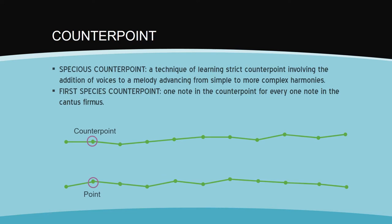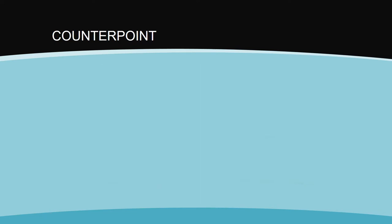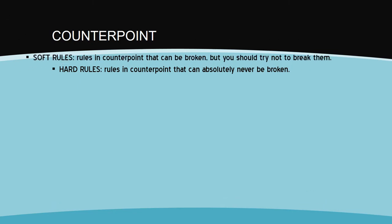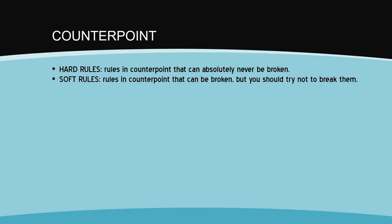So there are a bunch of rules that you need to learn in order to write a successful first species counterpoint. There are rules that absolutely, under no circumstances, should ever be broken. These are called hard rules. Then there are rules that aren't quite as important but you should still try to avoid breaking them. These are called soft rules.